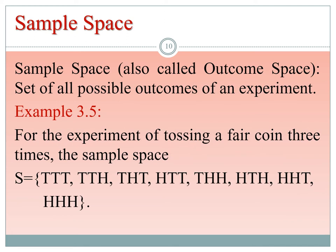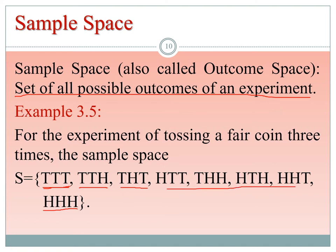The next important definition is sample space, also called the outcome space: the set of all possible outcomes of an experiment. For the experiment of tossing a fair coin three times, we can write eight possible outcomes: HHH, HHT, HTH, HTT, THH, THT, TTH, and TTT. This complete set is the sample space, usually denoted as capital S. Some textbooks use omega for the same notation.